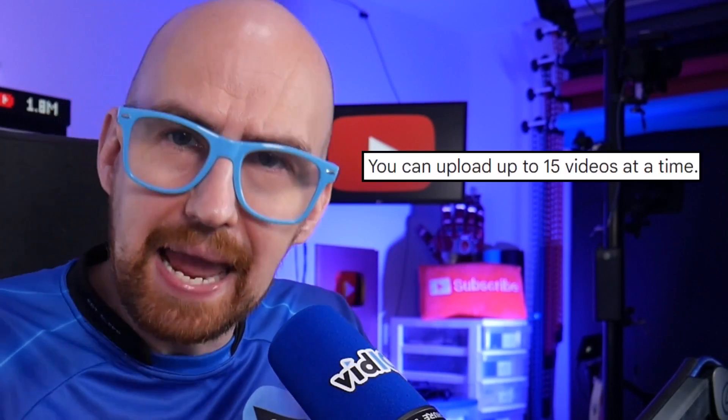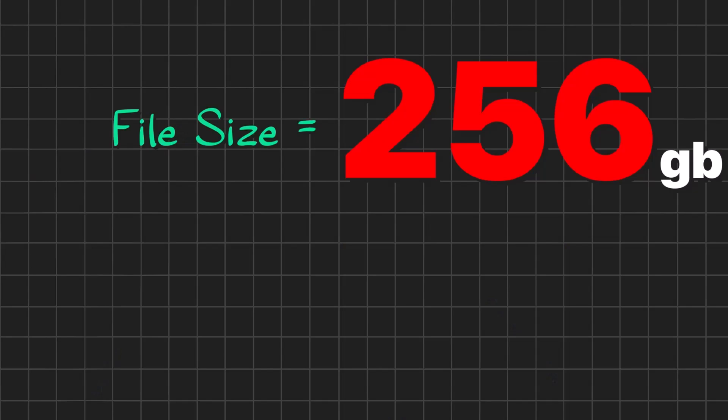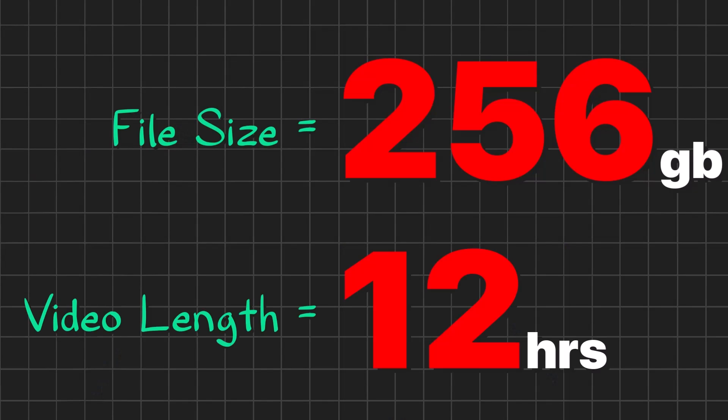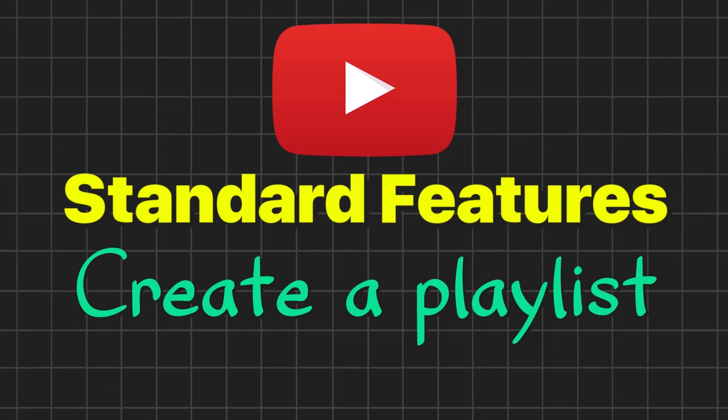Other bits of housekeeping around uploading videos include being able to upload 15 videos at any one time, and the maximum limit for a single video is 256 gigs and 12 hours of length. That's important for live streams — if your live streams are longer than 12 hours, they won't convert into video on demand. The other feature you get right out of the gate is the ability to create playlists, add collaborators to playlists, and add new videos to playlists.